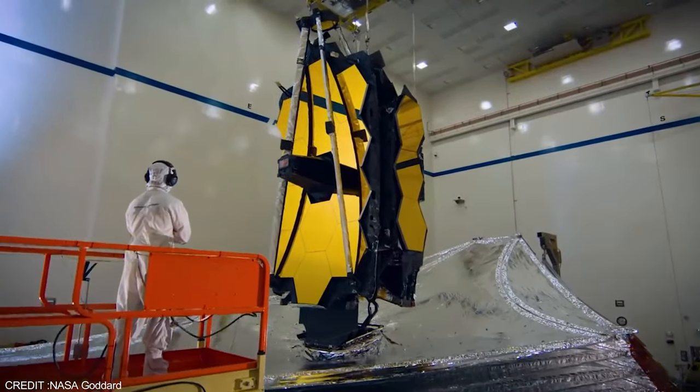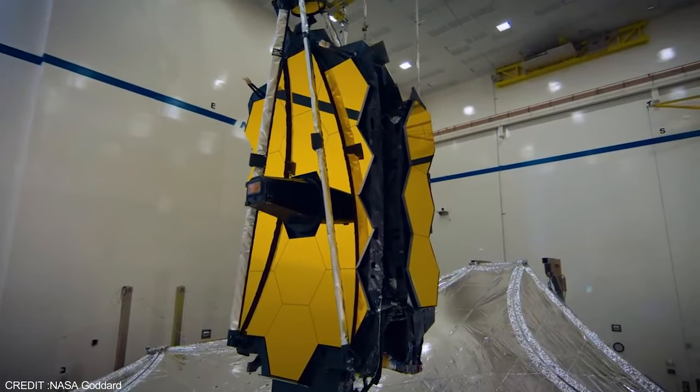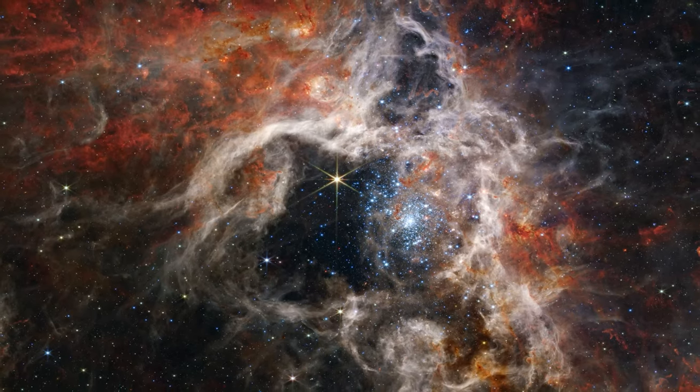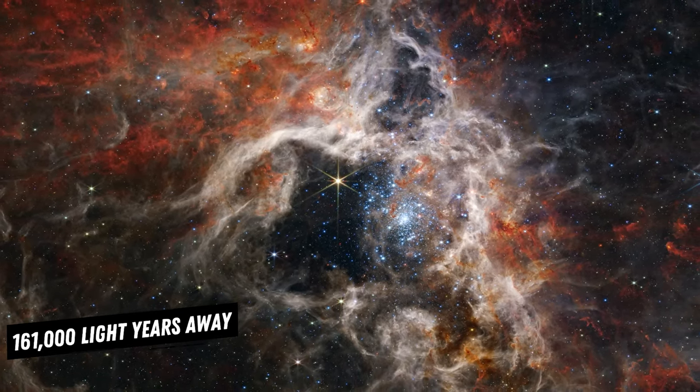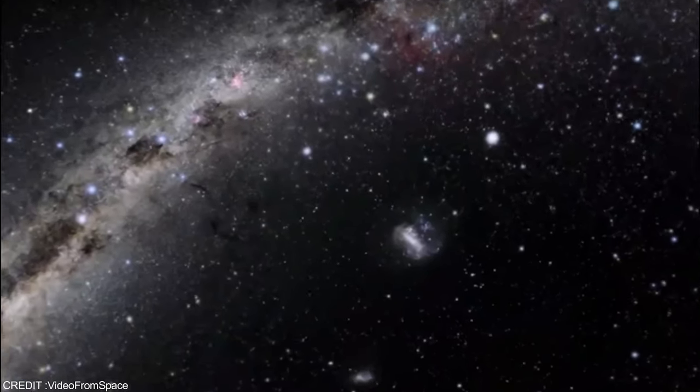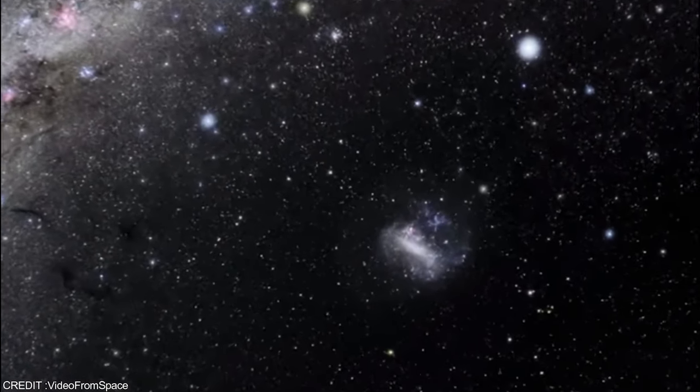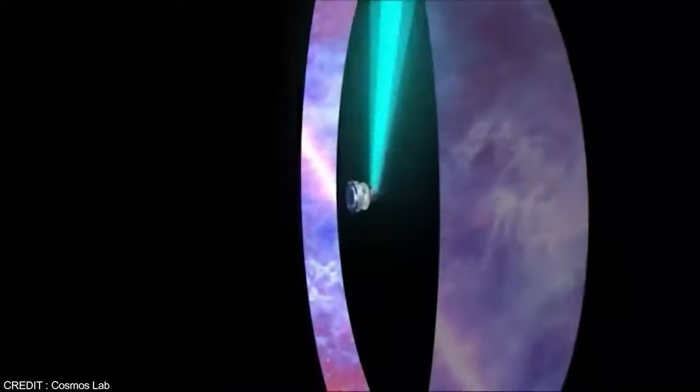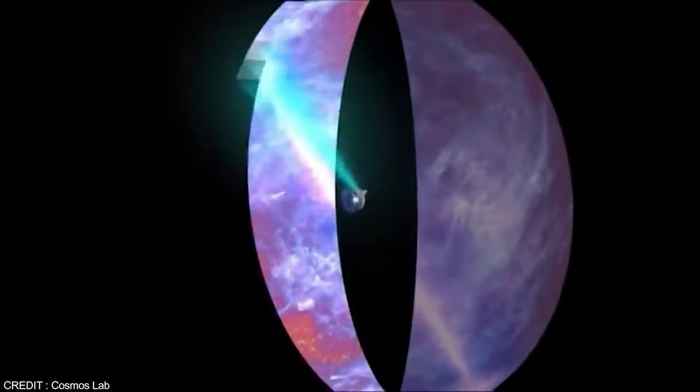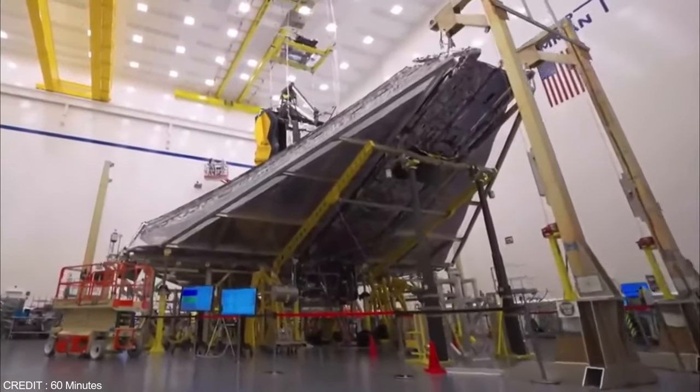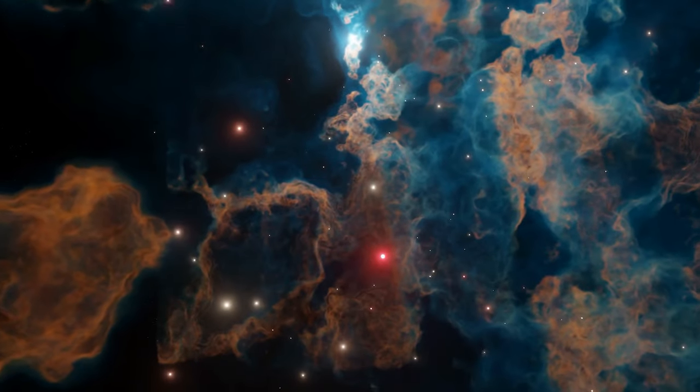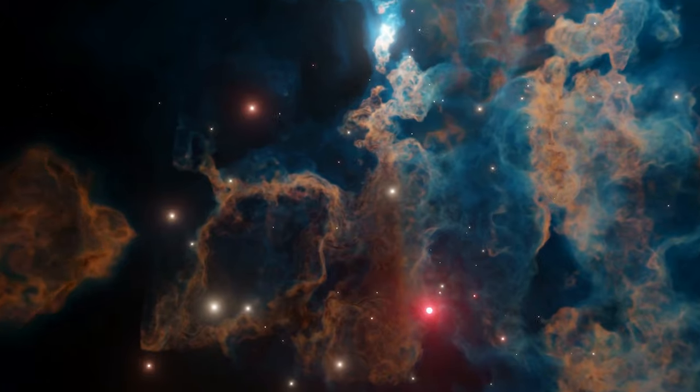JWST also captured a breathtaking view of the Tarantula Nebula, a star-forming region in the large Magellanic Cloud, located 161,000 light-years away from us. Known as 30 Doradus, the Tarantula Nebula is the brightest stellar nursery in the local group of galaxies. With its high-resolution infrared instruments, the JWST has uncovered thousands of young stars that were previously unseen, as well as gas and dust in the nebula and background galaxies.